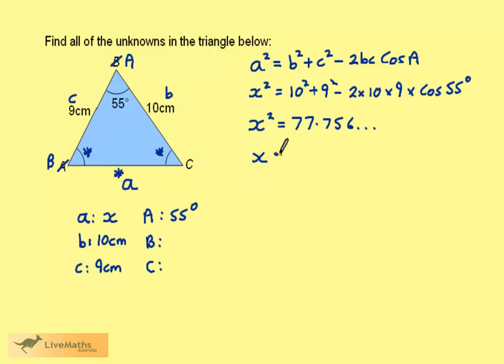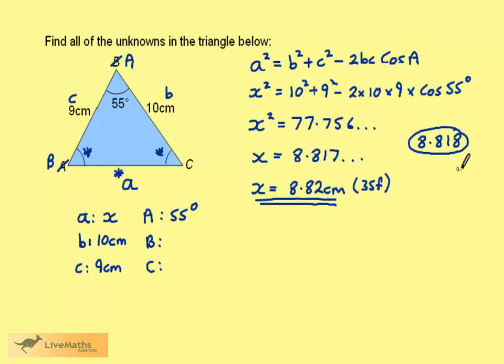Square rooting both sides gives X is 8.817 and so on. So X is 8.82 cm, correct to 3 significant figures. Since I'm going to use this value again in a calculation, I'm just going to store 8.818,